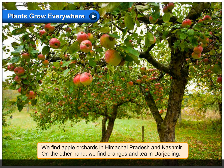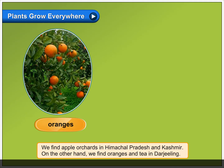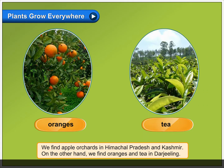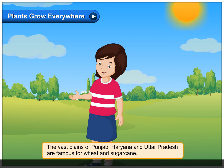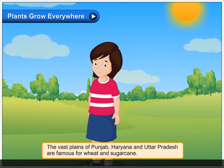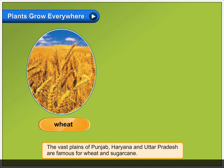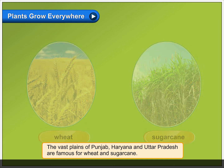We find apple orchards in Himachal Pradesh and Kashmir. On the other hand, we find oranges and tea in Darjeeling. The vast plains of Punjab, Haryana and Uttar Pradesh are famous for wheat and sugarcane.